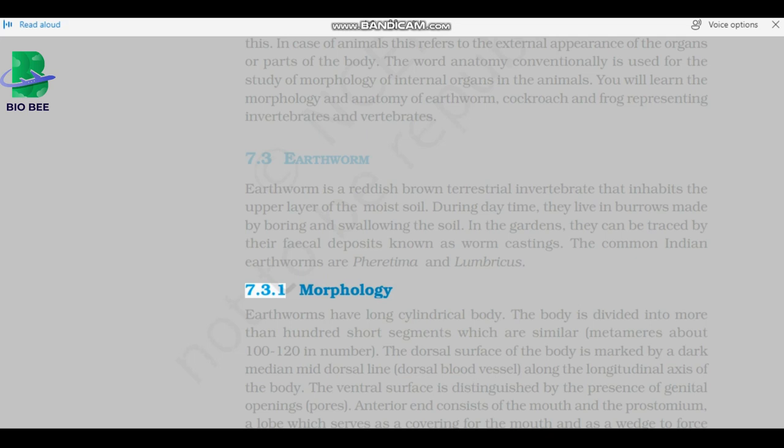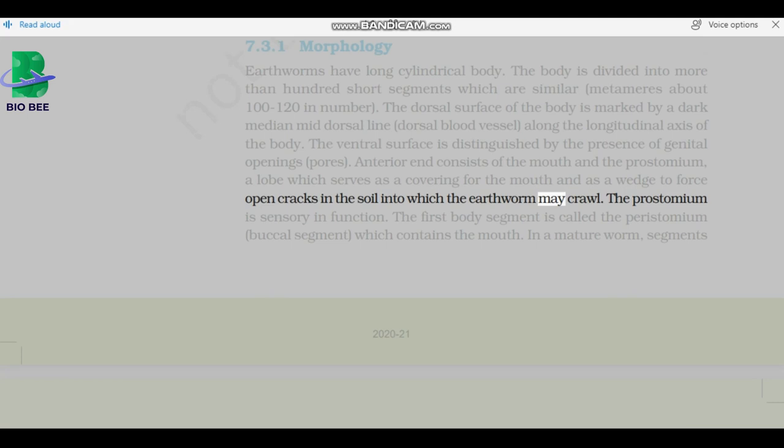Morphology: Earthworms have long cylindrical body. The body is divided into more than 100 short segments, which are similar, metameres, about 100 to 120 in number. The dorsal surface of the body is marked by a dark median mid-dorsal line, dorsal blood vessel, along the longitudinal axis of the body. The ventral surface is distinguished by the presence of genital openings, pores. Anterior end consists of the mouth and the prostomium, a lobe which serves as a covering for the mouth, and as a wedge to force open cracks in the soil into which the earthworm may crawl. The prostomium is sensory in function. The first body segment is called the peristomium, buccal segment, which contains the mouth.